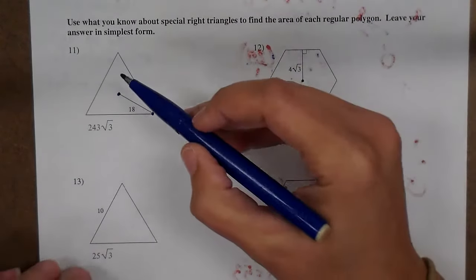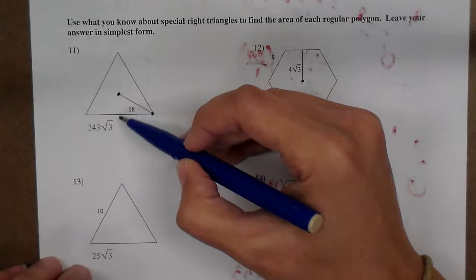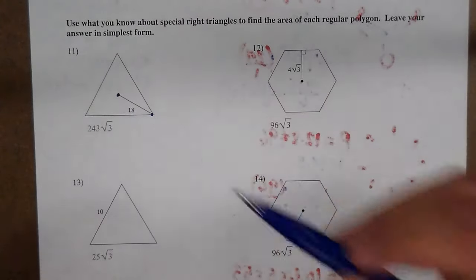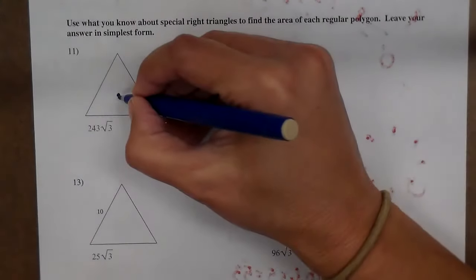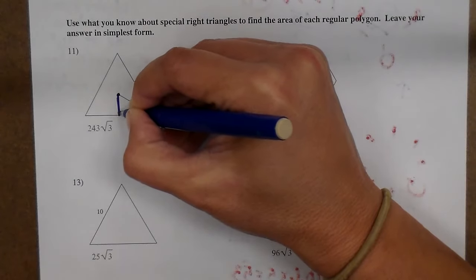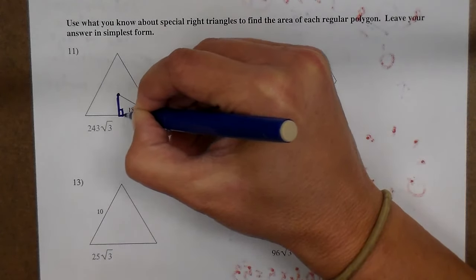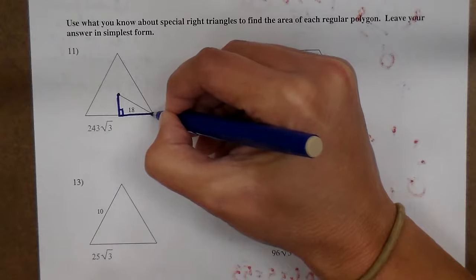The apothem goes from the center to one of the sides at a 90 degree angle. It's the perpendicular distance. I'm going to look at number 11. I want to find my apothem. My apothem is going to form a right triangle.